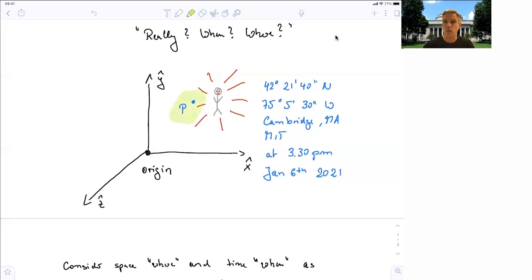I give you it's 42 degrees north, 75 degrees west, Cambridge, Massachusetts at MIT. You see MIT, the dome behind me, at 3:30 p.m. on January 6, 2021. So I give you the when and the where for this event.